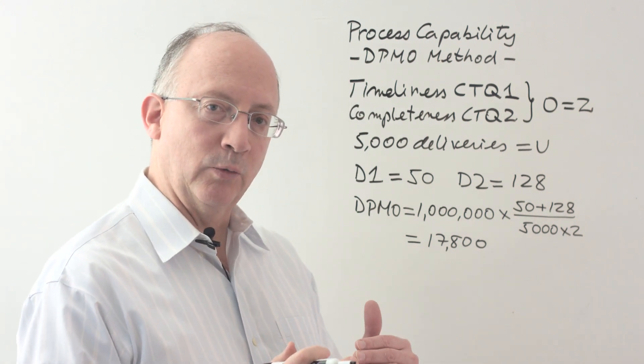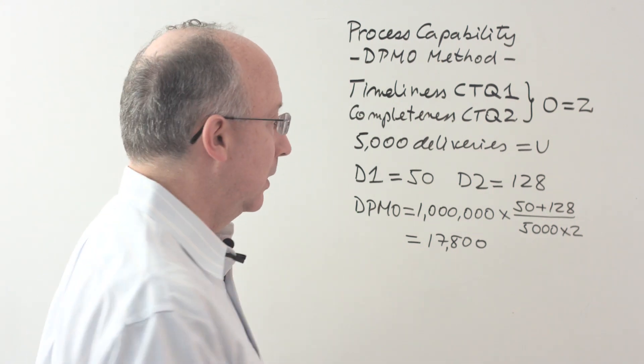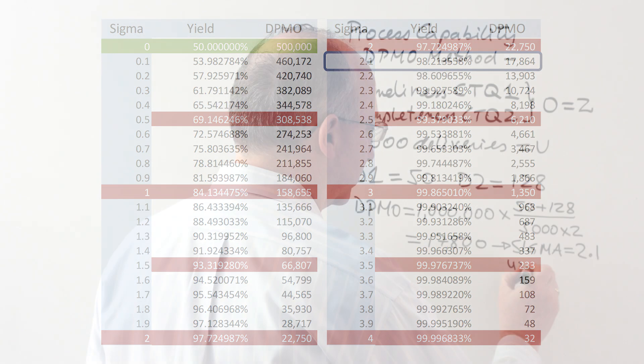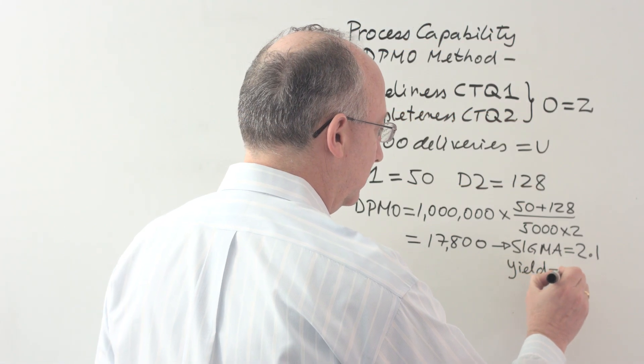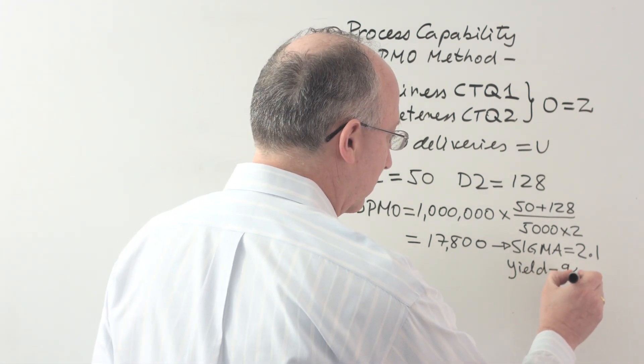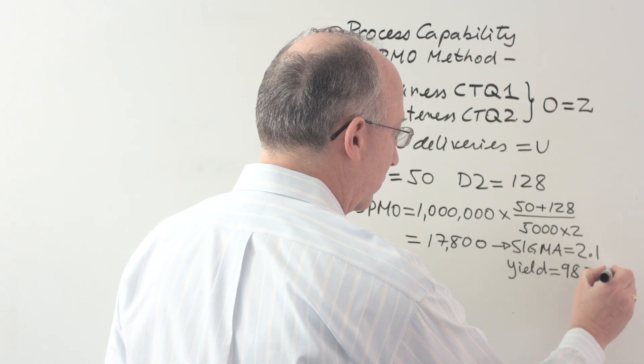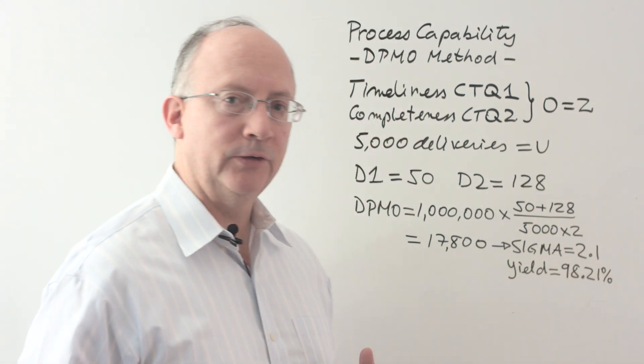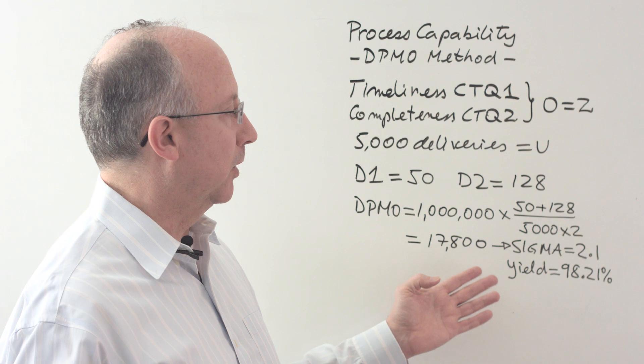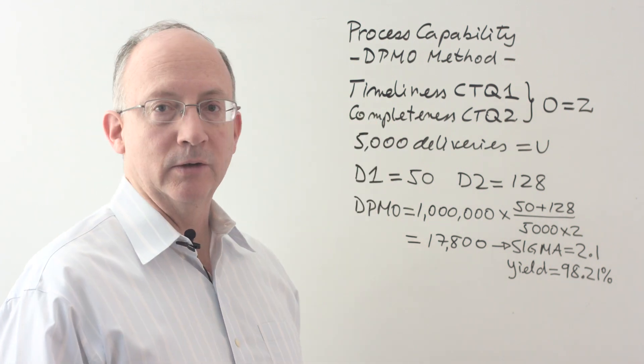This is the level of quality at which we found ourselves. When you go to the sigma table, you will find from the table that we are operating at a sigma level equal to 2.1, and this is going to represent a yield equal to 98.21%. This is the way in which the formula works, and this is the way in which we can calculate the performance of a process using the DPMO method.